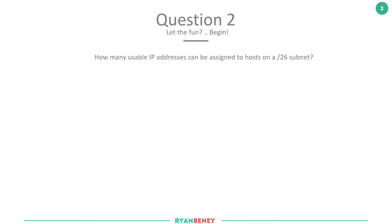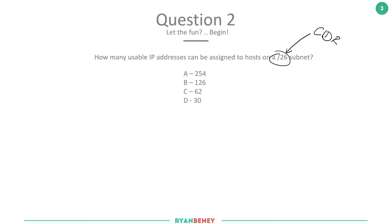Question two: how many usable IP addresses can be assigned to hosts on a /26 subnet? Remember, the slash 26 is a representation of a subnet mask in CIDR notation, also called network prefix notation. The possible answers are: A) 254, B) 126, C) 62, or D) 30. Pause the video, work out the answer, and then when you think you have it we'll go through it together.